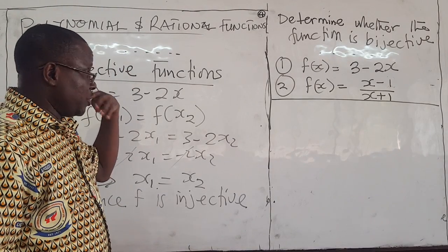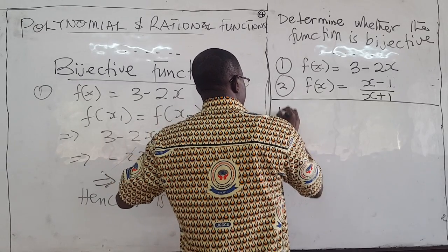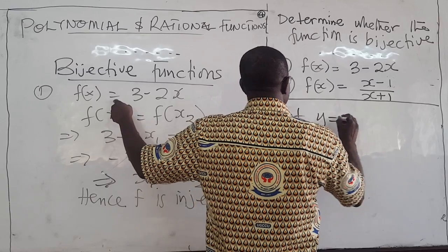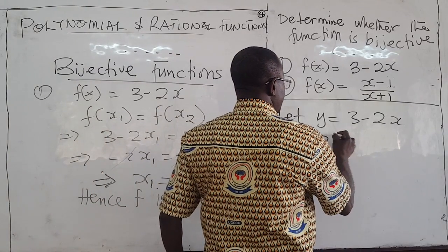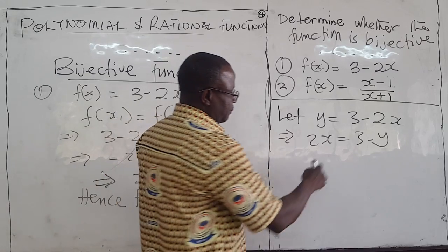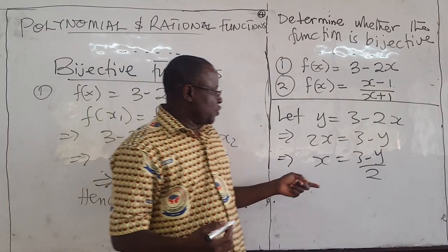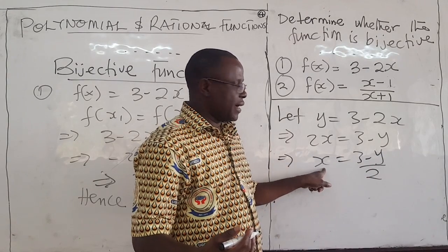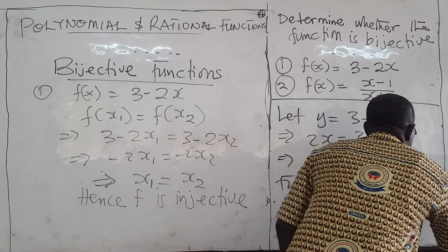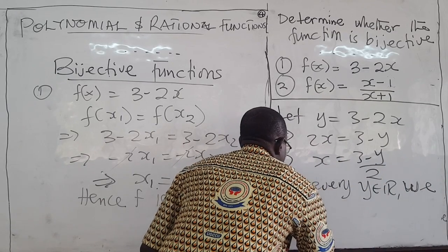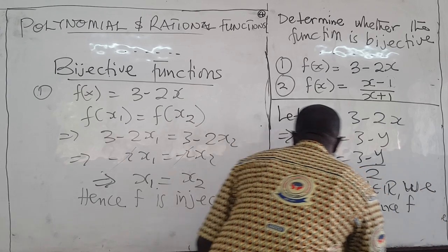Now we have to show that it is also onto. For the second part, let y equal 3 minus 2x. To show that it's onto, we solve for x. So we have 2x equals 3 minus y. Divide through by 2, and we get x equals (3 minus y) over 2. Since y is real, for every y we can get an x. Therefore, f is surjective.